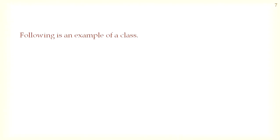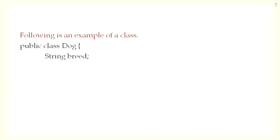Here is an example of a class. The name of the class is Dog. It has a variable 'breed' with data type String, a variable 'age' with data type integer, and a variable 'color' with data type String. It also contains a method called 'barking'. So the class Dog contains some variables and a method.